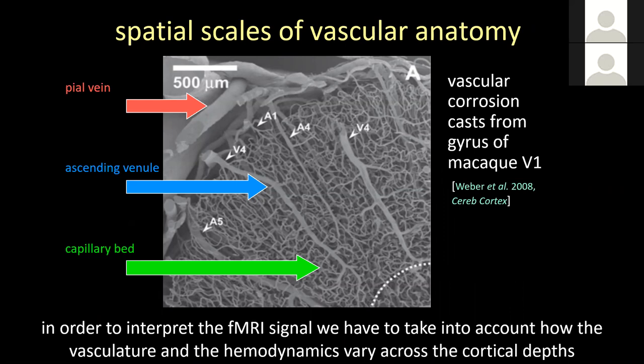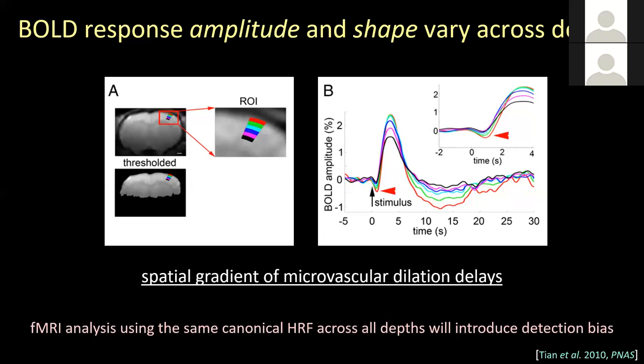This is really nicely demonstrated by recent work from Anna Devor's group, in which she showed that the BOLD response amplitude and shape vary systematically across cortical depths. This is from mouse cortex. Looking at the ROI in red at the top of the pial surface, the red trace has a very high amplitude, a very pronounced post-stimulus undershoot, as well as a small initial dip immediately following the neural activity. Comparing with the black ROI from the parenchyma, the black curve has no post-stimulus undershoot, a much smaller initial dip, and a smaller amplitude overall. So both the amplitude and shape vary.